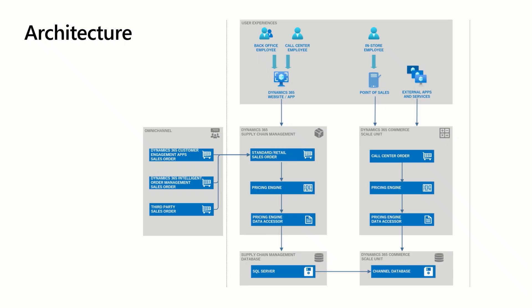Looking at the overall architecture, we have the Unified Pricing Engine represented for both price calculations done in Supply Chain Management and Commerce. The same business logic is utilized in both scenarios because it is built on the same runtime, which includes a collection of portable .NET libraries. This runtime employs the same attribute based pricing for calculating prices. This capability is used when sales orders are created by back office or call center users, through customer engagement apps, and third party apps. For customers using Dynamics 365 Commerce, the same engine is employed for in-store users operating point of sale as well as for any external apps or services connecting to the commerce scale unit. Customization and extension are fully supported.